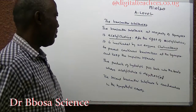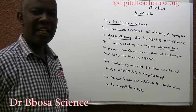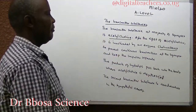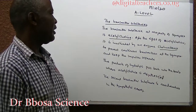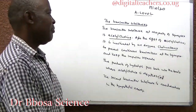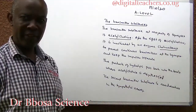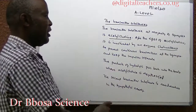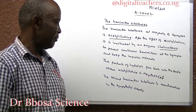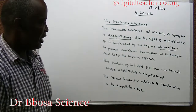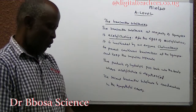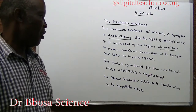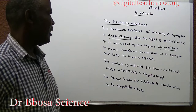Transmitter substances: the transmitter substance at the majority of synapses is acetylcholine. After its effect, acetylcholine is inactivated by the enzyme cholinesterase to prevent continuous transmission at the synapse and to keep impulses separate. The products of hydrolysis pass back into the knob where acetylcholine is resynthesized. The second transmitter substance is noradrenaline, found at sympathetic nerves.